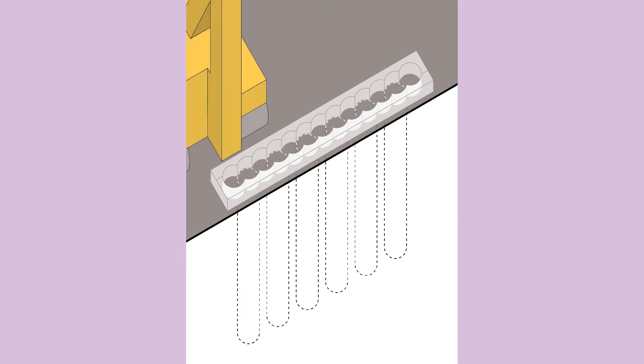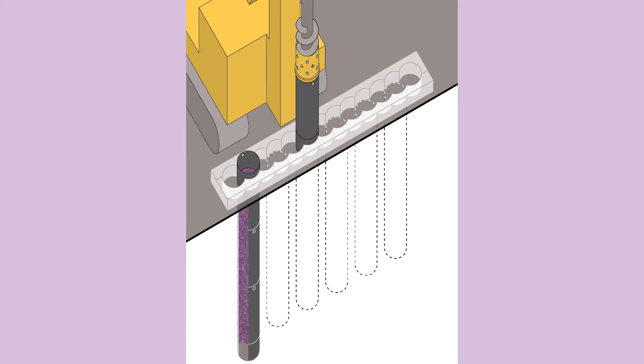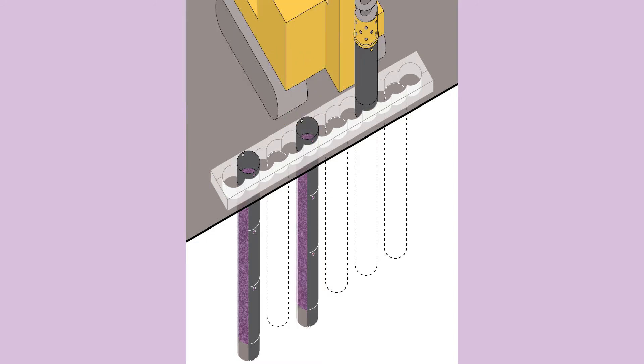The first pile is created by rotating a steel tube casing into the ground and using an auger, or corkscrew, to drill earth out of each segment. Additional casing segments are attached until the desired depth below the surface is reached.